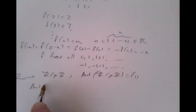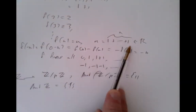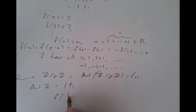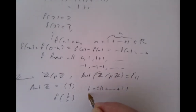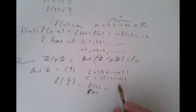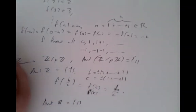Similarly, any automorphism of the integers must be trivial — it fixes everything that looks like a positive integer (sums of 1s) or the negatives of those. And for the rationals, f(b/c) must equal f(b)/f(c), but both b and c are fixed integers in the ring, so f(b/c) = b/c. Therefore, any automorphism of the rationals must be the identity automorphism.